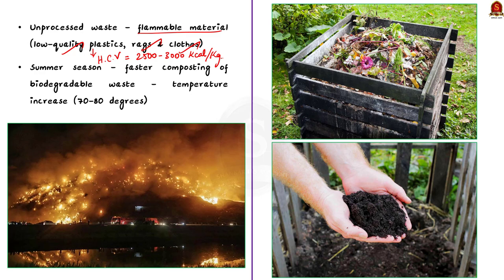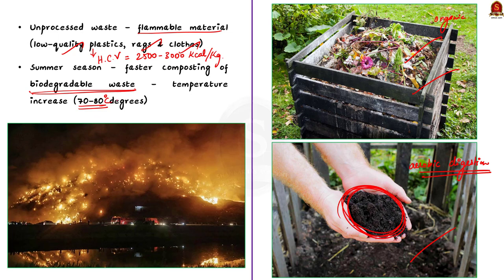In summer, the biodegradable fraction — kitchen waste and organic waste — starts composting faster. Composting is a process of aerobic digestion that converts organic material into a nutrient-rich product. The end product is called compost and looks like a dark, crumbly, earthy-smelling material. This composting process leads to an increase in temperature of the heap of waste in the landfill, which can go beyond 70 to 80 degrees Celsius. So — higher temperature plus flammable material like low quality plastics with high calorific value equals a high chance of catching a landfill fire. In some cases, fire can go on for months, which is why these landfill fires are so dangerous.